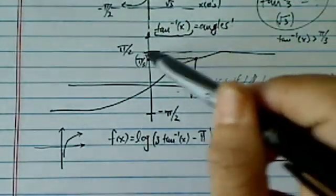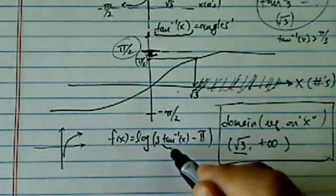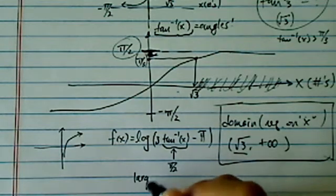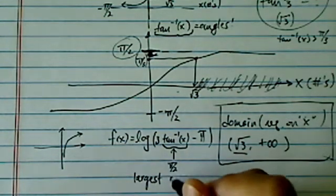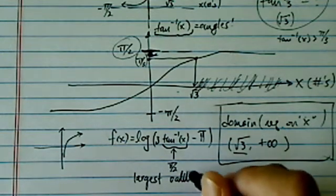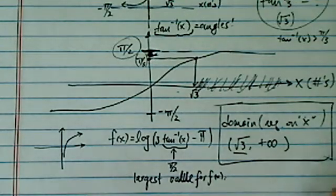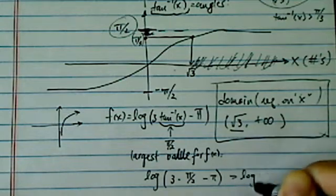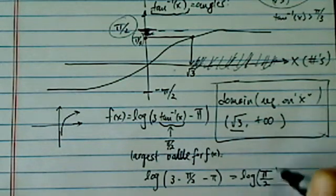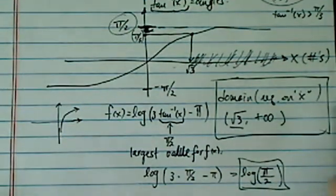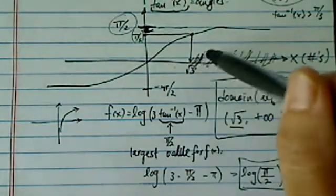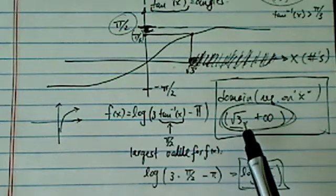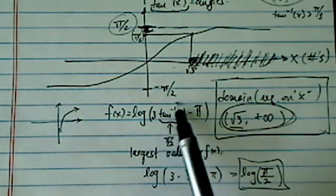Notice that arctangent is bounded by pi over two, so the largest the argument could ever get is pi over two. So the largest value for f(x) is log of three times pi over two minus pi, which equals log of pi over two. Now, what about the smallest? The smallest x can take on is radical three — when x equals radical three, this argument is close to zero.